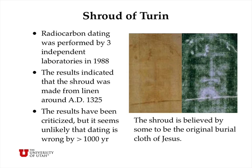One celebrated case of carbon dating was carried out by three independent laboratories in 1988 on the Shroud of Turin. The results indicated that the shroud was made from linen around 1325 AD. These results have been criticized by people who believe the Shroud of Turin is the original burial garment of Jesus Christ, but from a scientific point of view it seems unlikely that the carbon dating could be wrong by more than about 1,000 years.